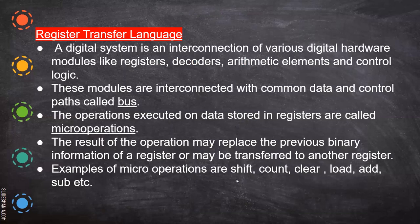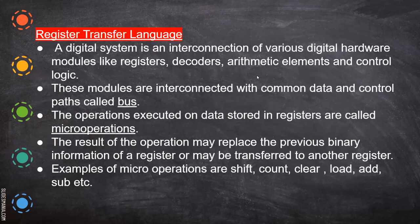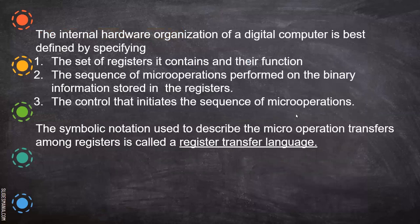Examples of micro operations include shift, counting, clear, load, add, subtraction, etc. The internal hardware organization of a digital computer can be best defined by specifying the set of registers it contains and their function. When you design an instruction set, that instruction set must specify the registers and the handling of internal operations — whether the data is to be transferred from C to B or C to D — which means you must have a good knowledge of all the internal components and how many registers a particular microprocessor consists of.